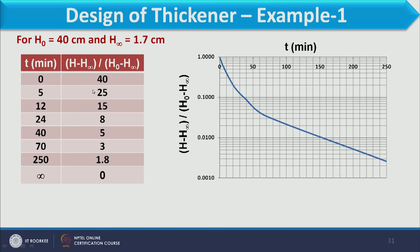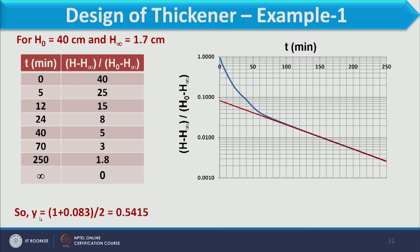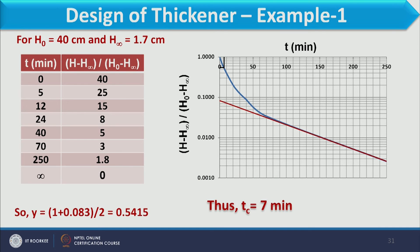We calculate (H minus H∞) / (H0 minus H∞) at different times and draw a semi-log graph with log Y-axis and linear time axis. We extend the linear portion of this curve to find Y-dash, then calculate Y = (1 + Y-dash)/2 = 0.5415. The corresponding time value is read as Tc = 7 minutes, so the critical sedimentation time is 7 minutes.